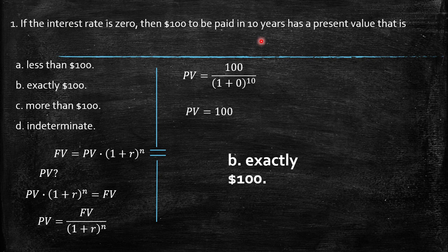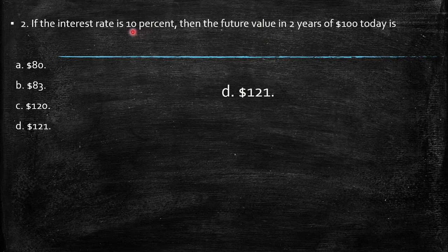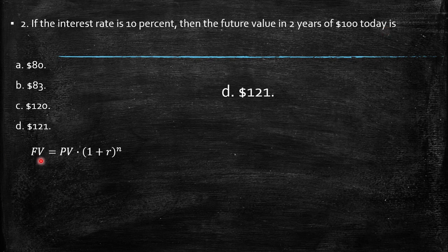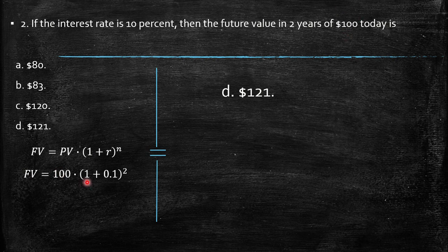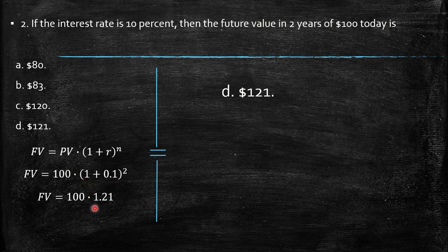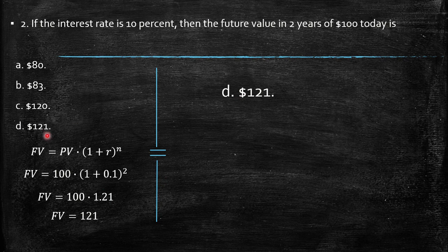Question 2 is exactly the same, just with the difference that the interest rate is 10%, and we need the future value in 2 years of $100 today. We have the equation, so we replace: present value is $100, (1 + 0.1)^2. So 1.1 times 1.1 times 100 gives us final value of $121, which is exactly the answer.